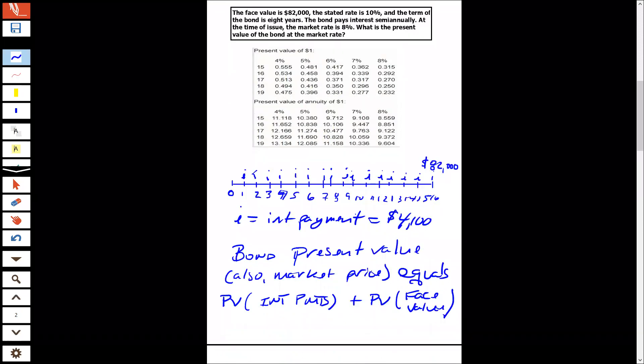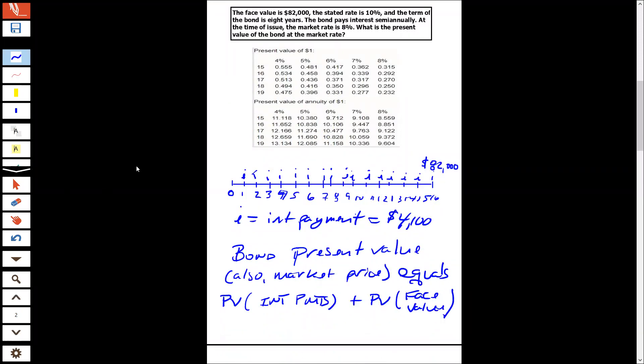So just to kind of lay out what we did, it's a little bit messy here, but this is a timeline of cash flows. So this is a tool that's used in finance and accounting and economics. So it's zero to 16. You get this $82,000 at the end. And along the way, you get an interest payment every six months. So if you're an investor, the benefit you'd pay, we're going to calculate how much you're going to pay to get 16 interest payments of 4,100 plus $82,000 at the end.